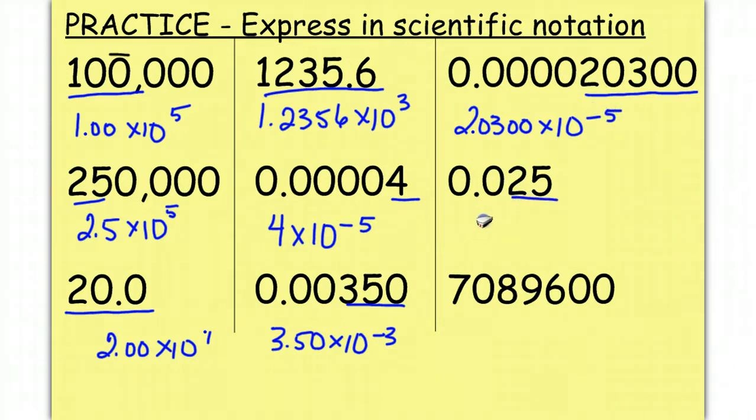We're going to have 2 numbers here, 2.5 times 10 to the negative, and we go 1, 2. From the 7 to the 6 is significant, so we'll have 7.0896 times 10 to the, the decimal is understood to be here, so 1, 2, 3, 4, 5, 6.